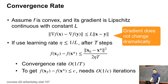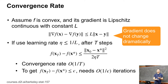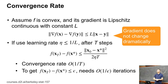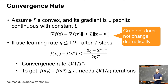Looking at the bound on the right-hand side: first, it depends on how good the initial point x0 is. If we randomly initialize, it may be far away from x*, making the bound large. But if we use fine-tuning, starting from a very good point very close to x*, the gap is much smaller. That's why fine-tuning makes optimization much easier.